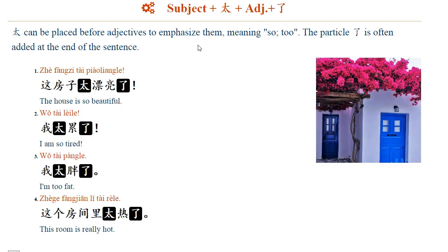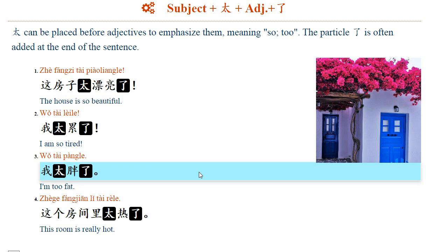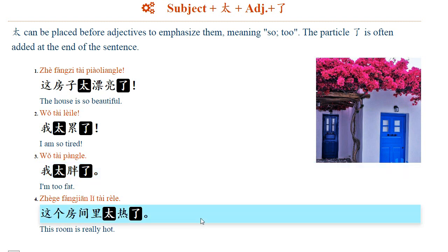太 can be placed before adjectives to emphasize them, meaning 'so' or 'too.' The particle 了 is often added at the end of the sentence. For example: 这房子太漂亮了。 我太累了。 我太胖了。 这个房间里太热了。